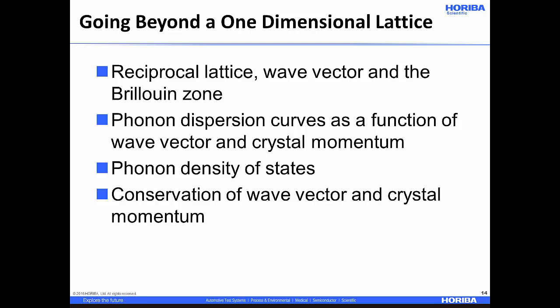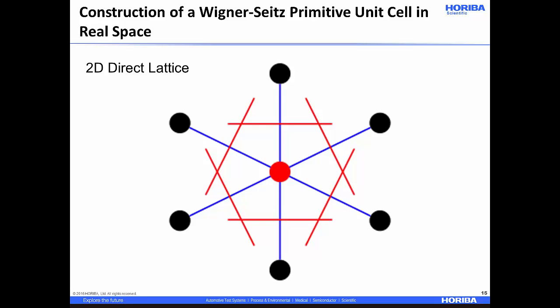Having established concepts of K vector, wave vector, reciprocal space, and the Brillouin zone in one dimension, we want to go beyond the one-dimensional lattice and discuss the reciprocal lattice with the wave vector and the Brillouin zone for three-dimensional structures, then discuss phonon dispersion curves, phonon density of states, and conservation of wave vector and crystal momentum.